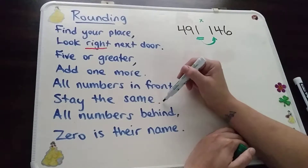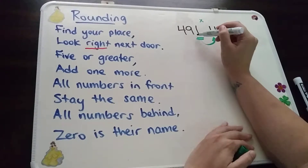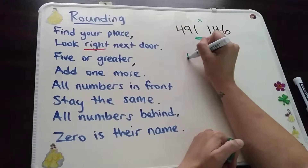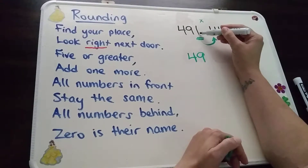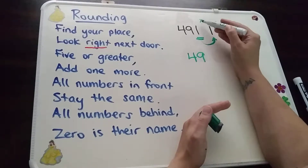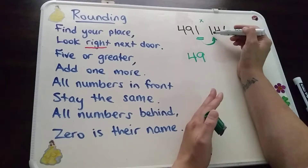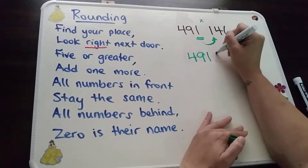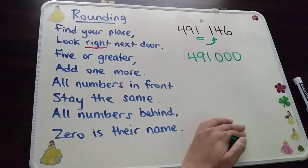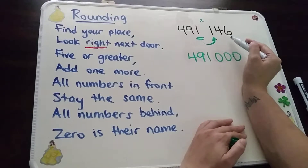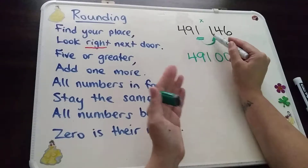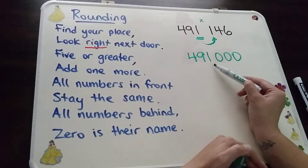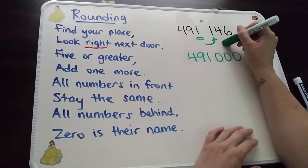So the next part: all numbers in front stay the same. In this case, I do have numbers in the front and those are the ones that are going to stay the same. This is where I was working — the thousands place. I have a four and a nine in front of it, so those ones are going to stay the same. I was working with my thousands place; I have a one there. But I'm not changing that because the number next to it was not greater than five, so it still stays one. And then all numbers behind, zero is their name — one, two, three numbers behind, one, two, three zeros. So 491,146 rounded to the nearest thousand is closest to 491,000.